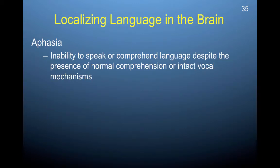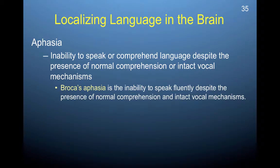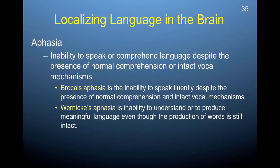One condition that has helped us localize brain processing is aphasia — an inability to speak or comprehend language despite the presence of normal comprehension or intact vocal mechanisms. So if you have aphasia, your ears may function and your vocal mechanisms may be intact, yet you still cannot speak or comprehend language. Broca's aphasia results from damage to Broca's area and causes an inability to speak fluently despite normal comprehension and an intact ability to make sounds. Wernicke's aphasia, on the other hand, is an inability to understand or produce meaningful language even though the production of words remains intact — you have trouble understanding what others say even though you can still produce some words.